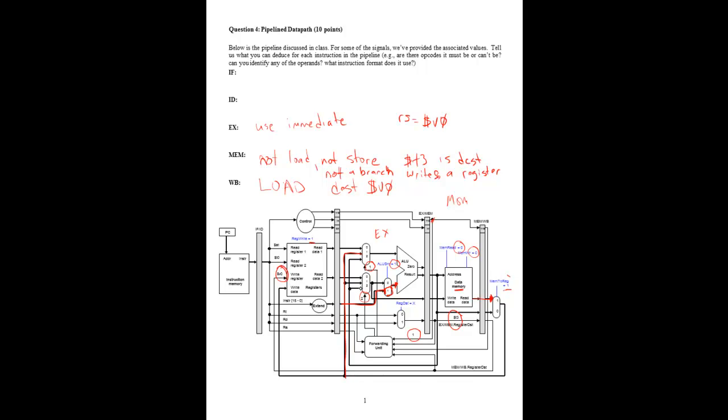The second multiplexer has its input set to two, so that means it's reading the value that's being written in the mem stage. And that we know is T3. So we know that RT for that instruction is T3.